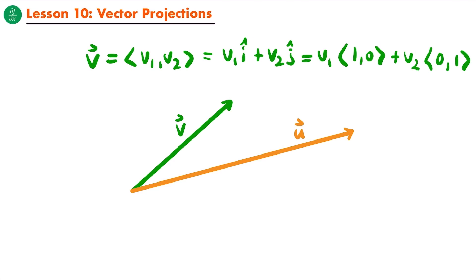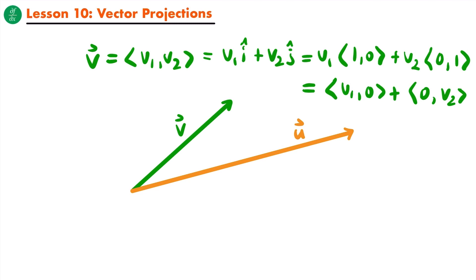If we perform scalar multiplication, multiplying v1 by both components and v2 by both components, then vector v equals the addition of two vectors: (v1, 0) and (0, v2). These are two vectors that added together represent vector v — v1 plus 0 is v1, and 0 plus v2 is v2. So we call these two vectors the vector components of vector v.